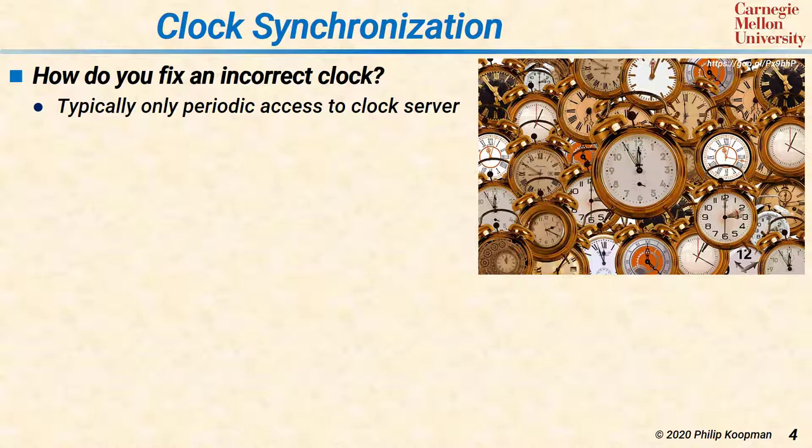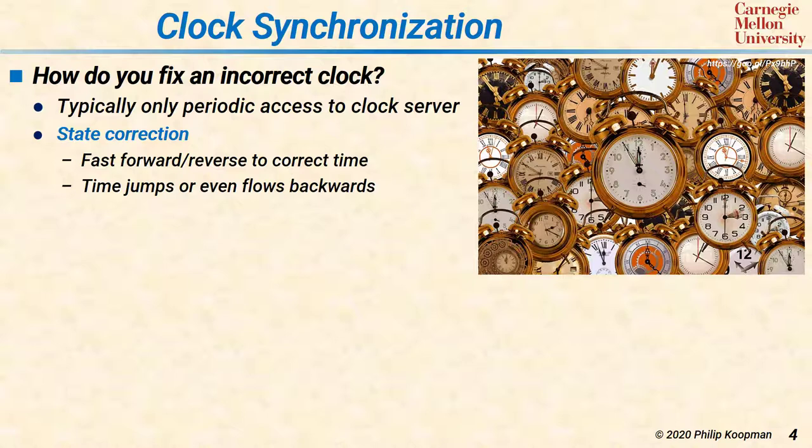If you have a local clock that's wrong, you have a choice to make: how do you fix it? There are two ways. The first way is state correction. State correction is fast forwarding or reversing to the correct time. So if you have a watch or a digital clock and use the go-forward or go-backward buttons, that's state correction — you basically jump forward or backward.